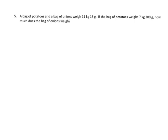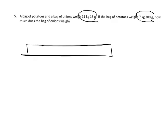All right, in our last example, we have a bag of potatoes and a bag of onions that weigh a total of 11 kilograms, 15 grams. And if the bag of potatoes weighs 7 kilograms, 300 grams, how much does the bag of onions weigh?